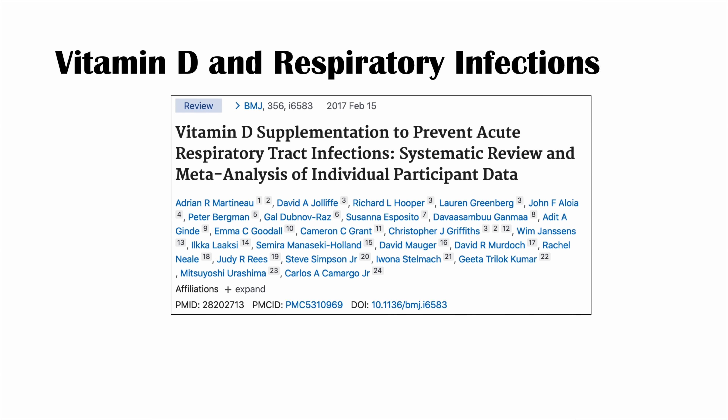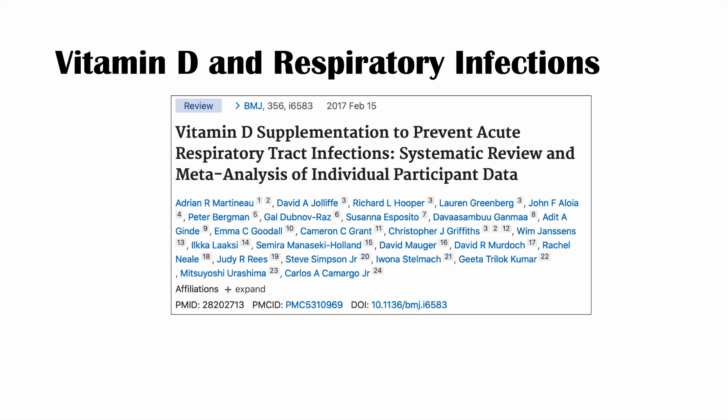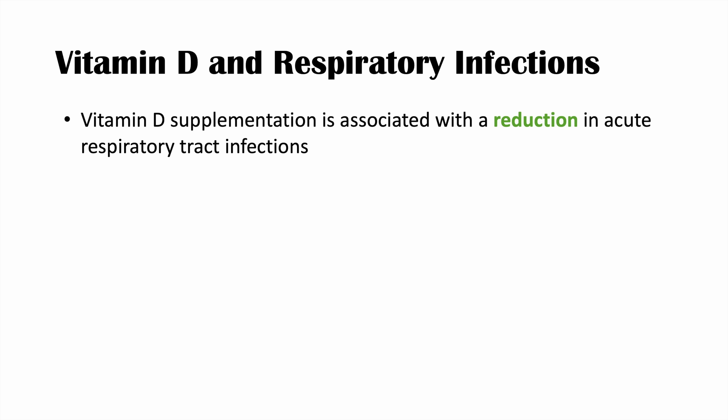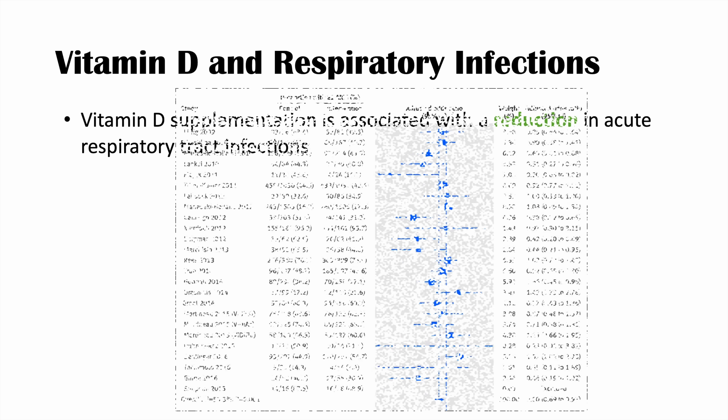What about vitamin D and respiratory infections more specifically? In this article entitled Vitamin D Supplementation to Prevent Acute Respiratory Tract Infections: Systematic Review and Meta-Analysis of Individual Participant Data, published in BMJ in 2017, the authors looked at many different articles and conglomerated the evidence and data. This meta-analysis showed that vitamin D supplementation is associated with a reduction in acute respiratory tract infections. Here is a table from that meta-analysis showing the list of articles and adjusted odds ratios.